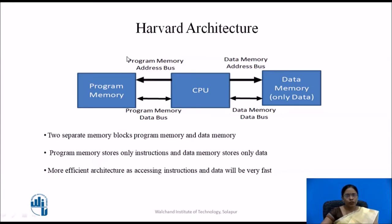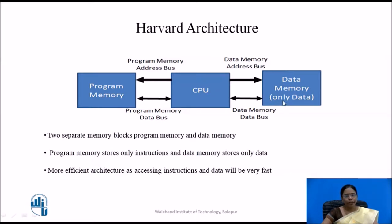Harvard architecture uses separate program memory and separate data memory — two distinct memory blocks. Program memory stores instructions and data memory stores only data. This architecture is more efficient because instructions and data are processed simultaneously, making it faster than Von Neumann architecture.